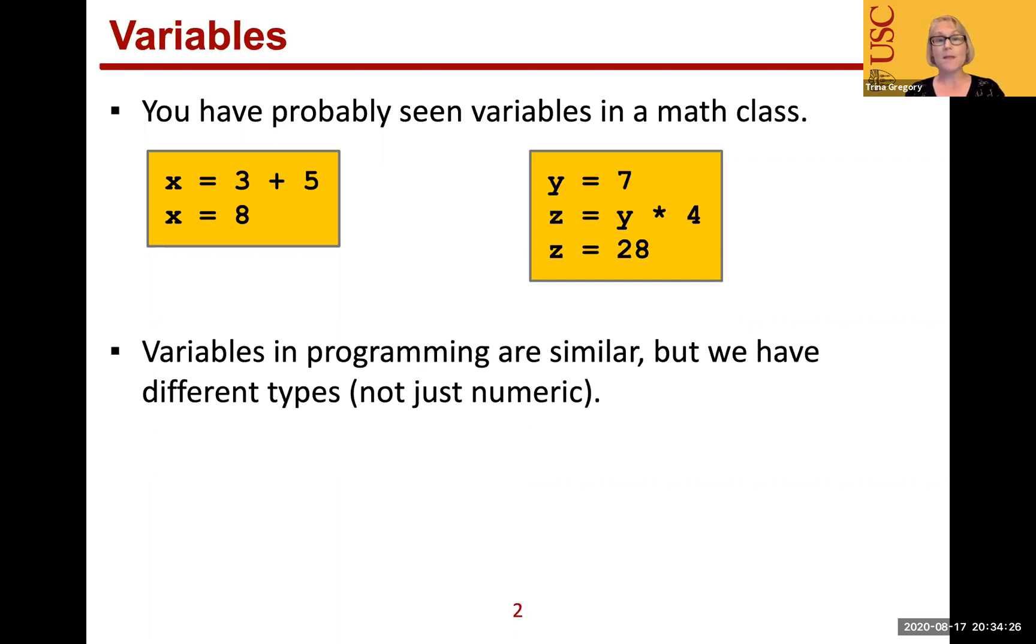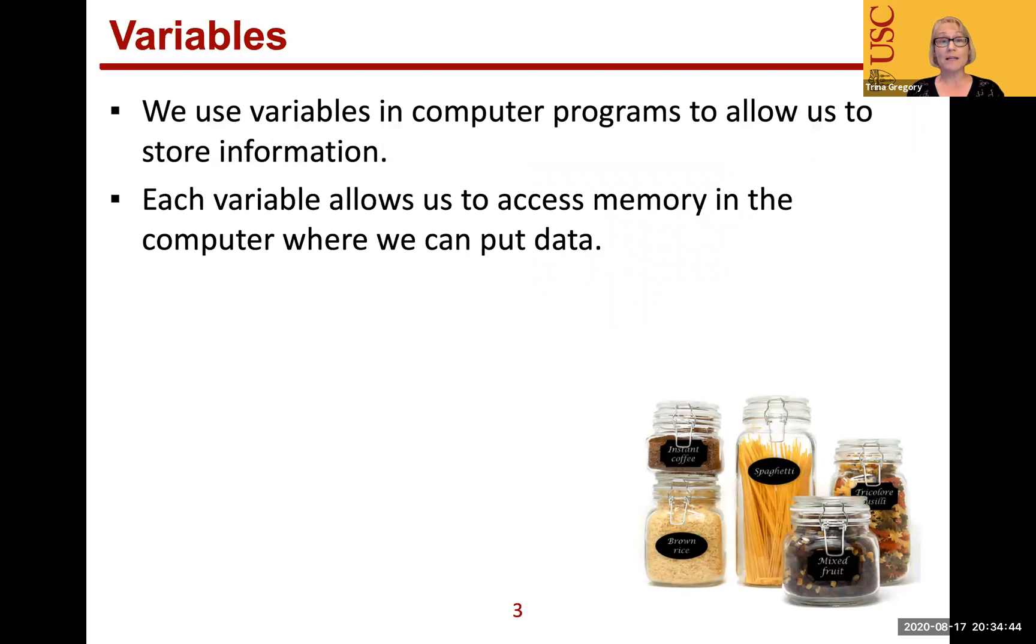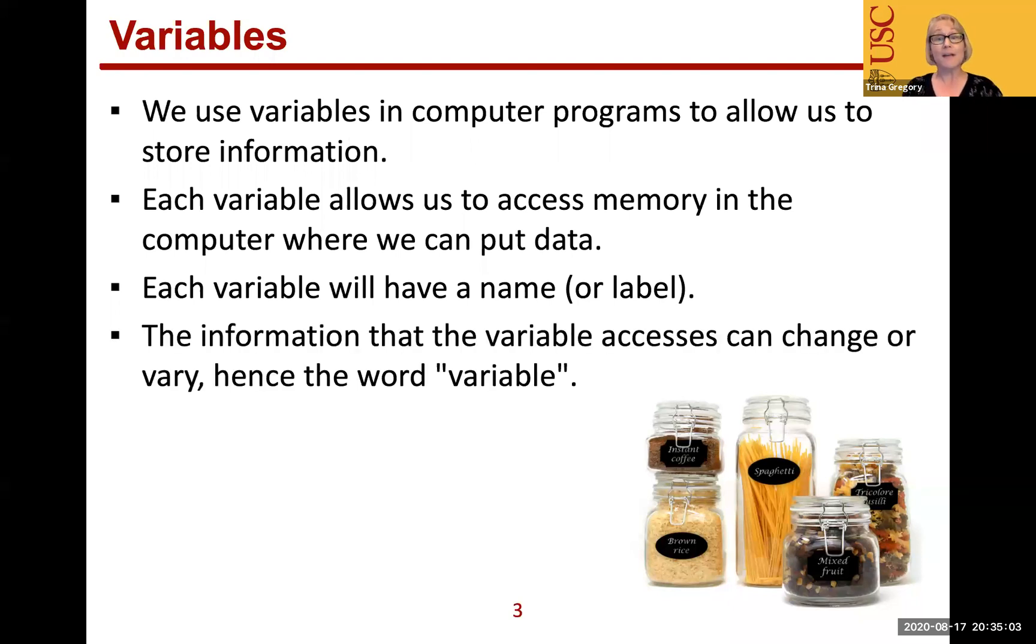Variables in programming are similar, but we can have different types, not just numbers, but we can have things like strings. We use variables to allow us to store information, and variables is one of those core fundamental concepts in programming. Each variable allows us to access memory in a computer where this data is put. We get to label that variable. I put this image of jars because notice that there's labels on them, there's stuff inside the jars as well as these labels, and that's like a variable. The information that we access can change. That's why we call it a variable, because we can change that value.